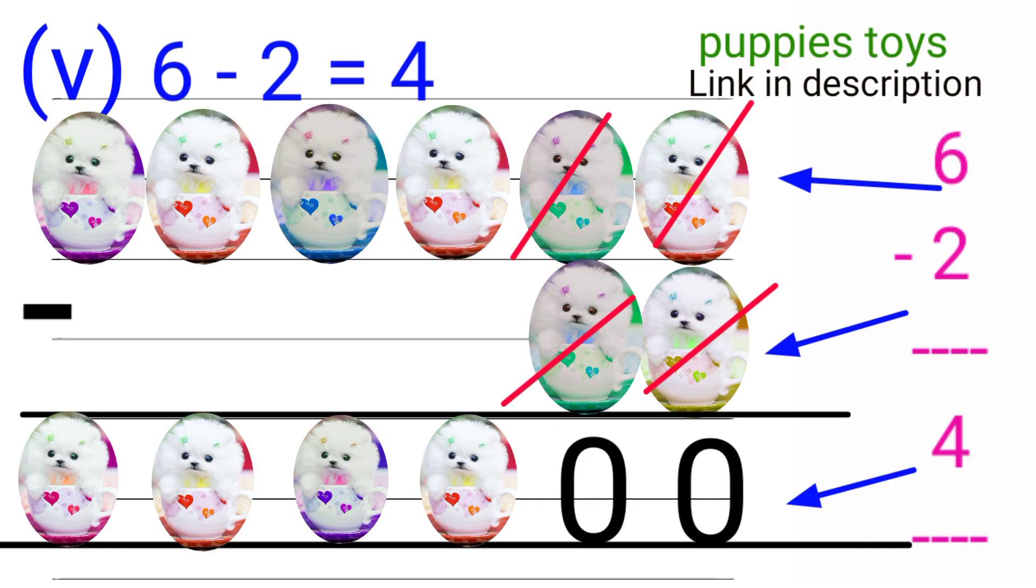Fifth one: 6 minus 2 equals how much? Here we have six puppies, I gave you two puppies, so how many left with me? Count: one, two, three, four. Only four puppies are left with me, so 6 minus 2 equals 4.